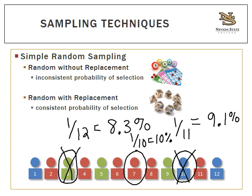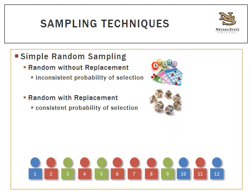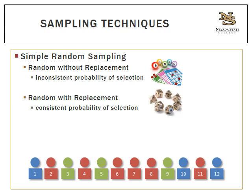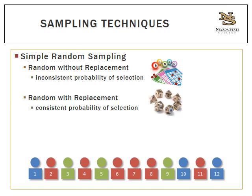With random sampling with replacement using that same population of 12: selecting green 3 has a 1-in-12 or 8.3% chance. I replace that person and make another selection — say red 8 — and the probability is also 1 in 12, or 8.3%, because I'm always drawing from the same consistently sized population. It's important to note that random sampling with replacement is the gold standard in statistics, and many statistical analyses we'll use this semester rely on that assumption.